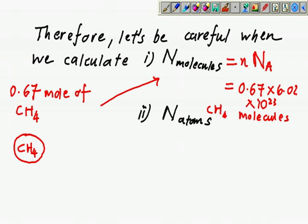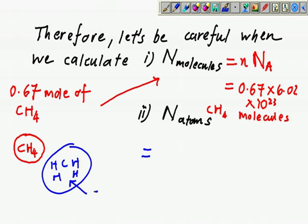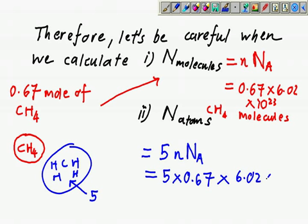Now if they ask for number of atoms, you have to be careful because we need to modify the formula. Since in CH4 we have C-H-H-H-H, how many atoms inside? Five. So we need to put 5 there, then n and NA. Because of this, I use 5 times 0.67 times 6.02 times 10 power 23.